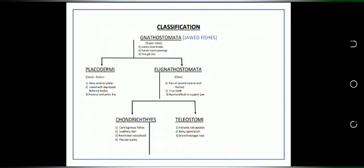Classification of Superclass Gnathostomata. The Superclass Gnathostomata mainly includes jawed vertebrates and is divided into two classes. The first one is Class Placodermi which is now extinct and the second one is Class Eugnathostomata.